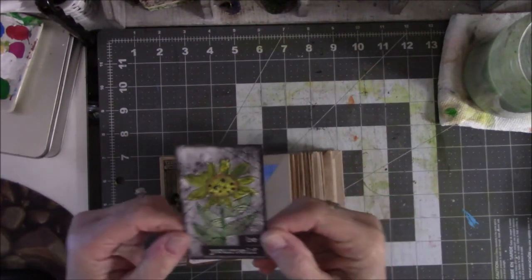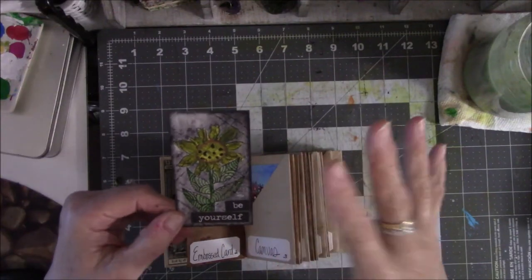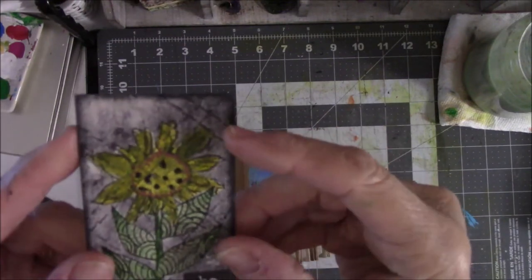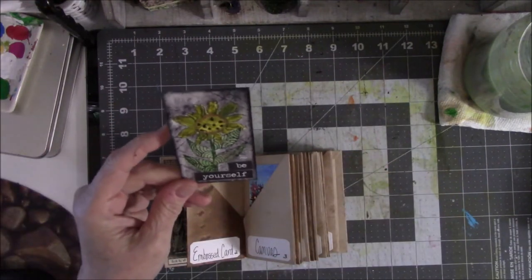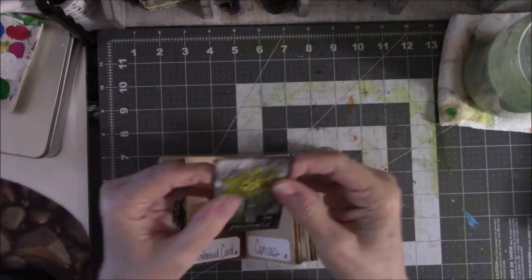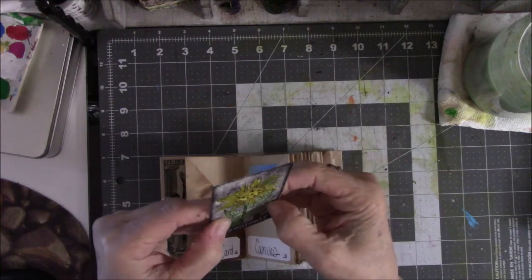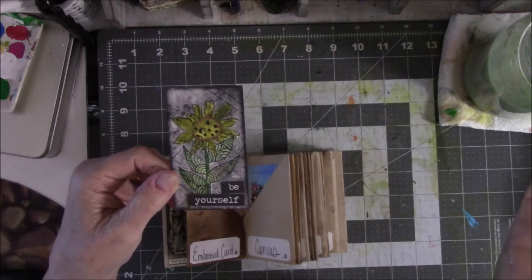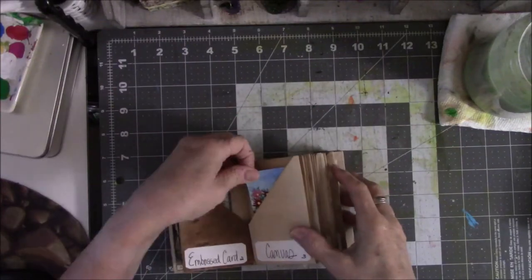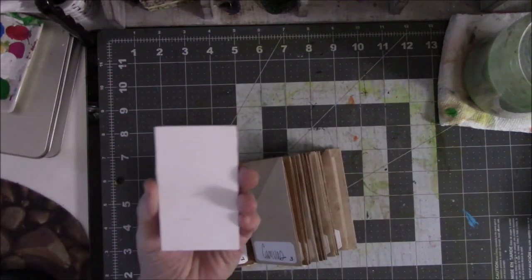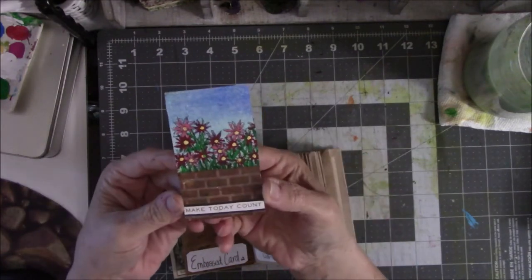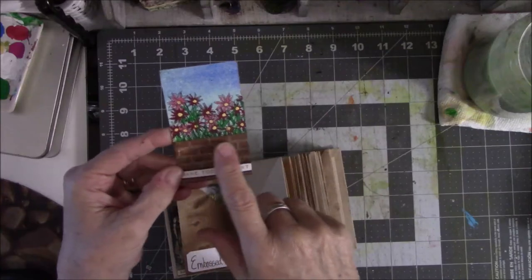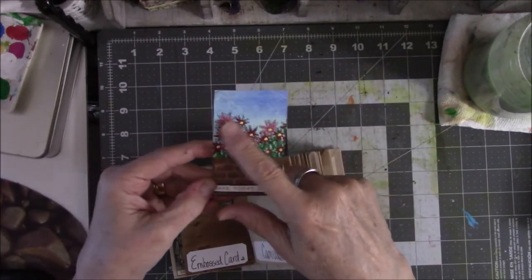This one is an embossed card which I used in a navy blue or dark blue. It's hard to see the lines but it is embossed. Then I took some stuff I already had, I drew this on, and I just put words that I got from a Tim Holtz sticker set. This is canvas on the back of a business card. It says make today count.